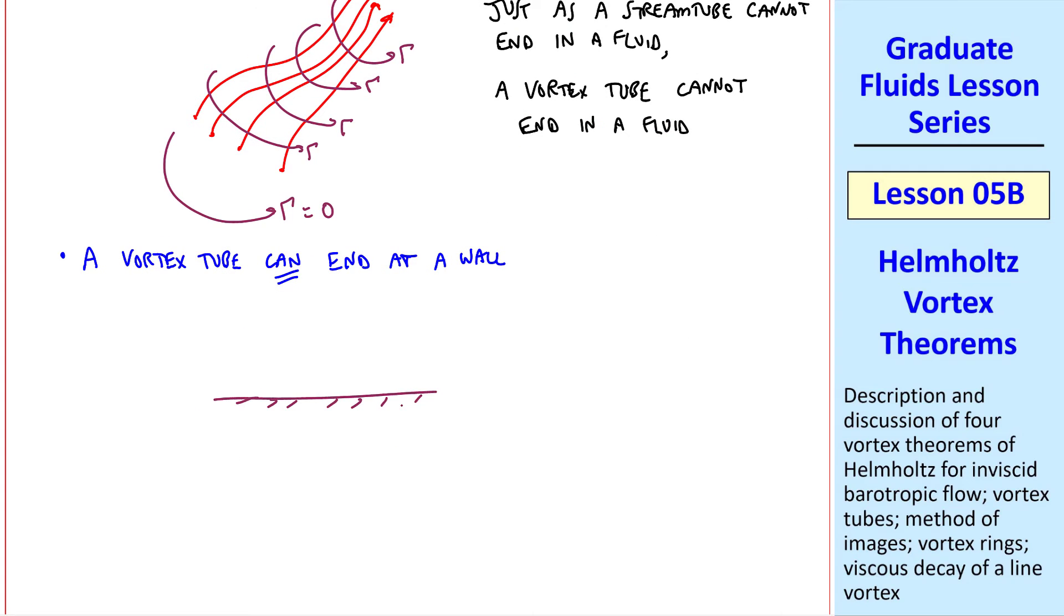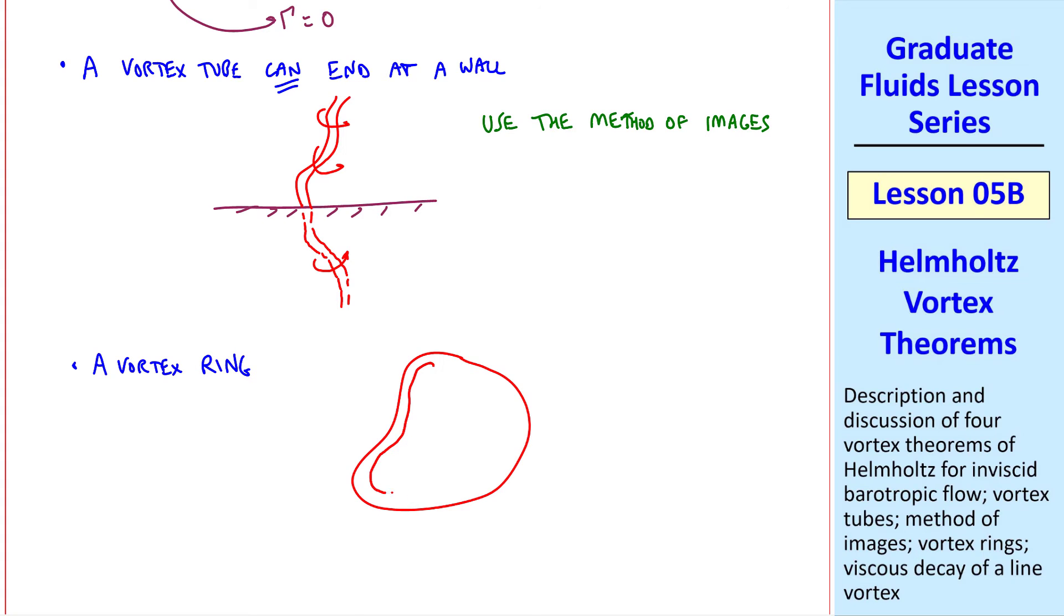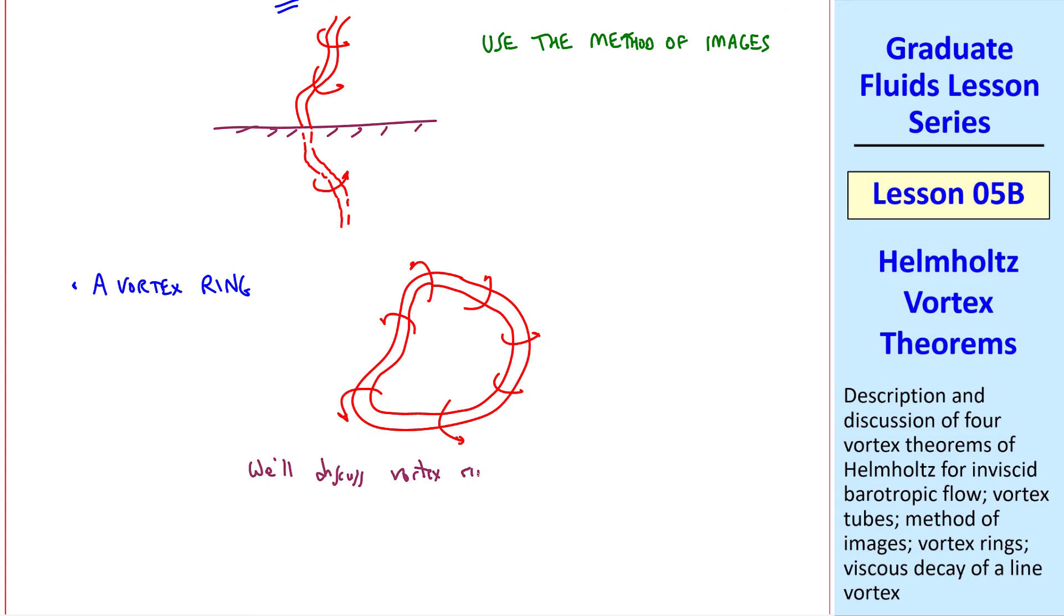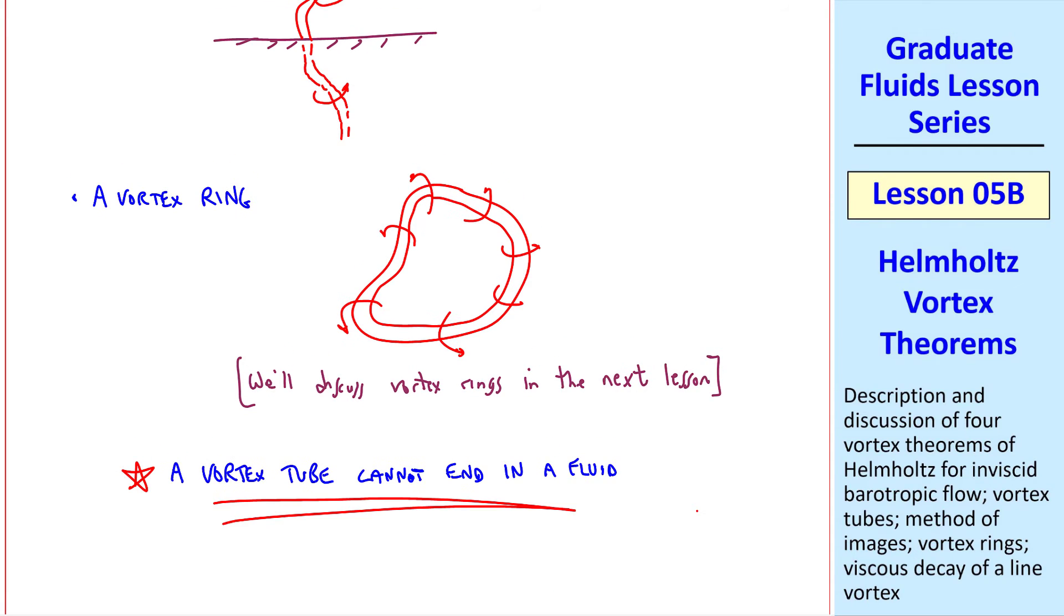Note that a vortex tube can end at a wall. Suppose this is our wall, and this is our vortex tube. If it bothers you, you can imagine a mirror image vortex tube underneath the wall. This is not real, of course, but the method of images is often used in fluid mechanics. You can also have a vortex ring, where the vortex closes on itself, and the circulation remains constant around this vortex at any point along the ring. A smoke ring is a common example. We conclude a vortex tube cannot end in a fluid. This is Helmholtz's third theorem.